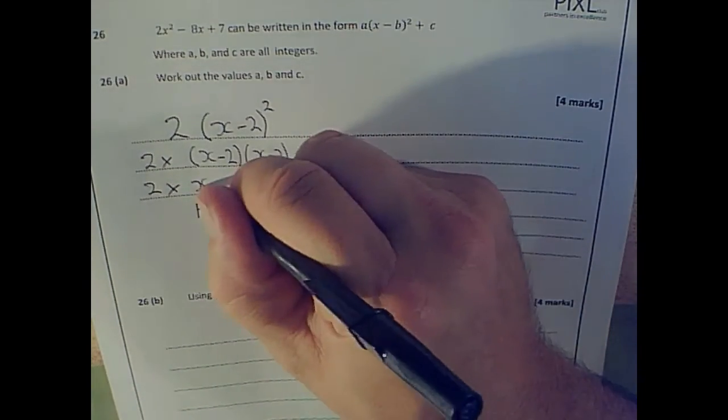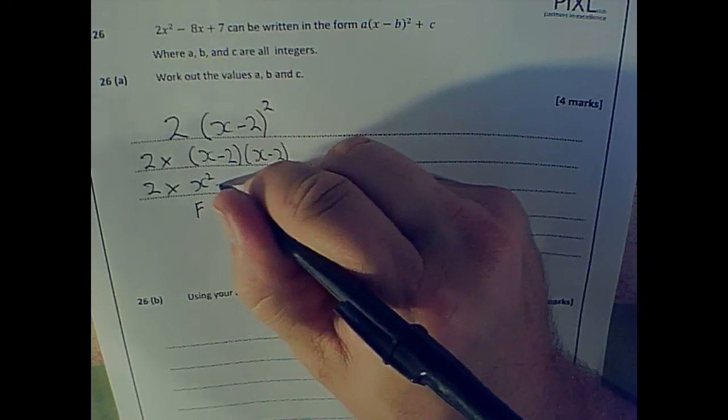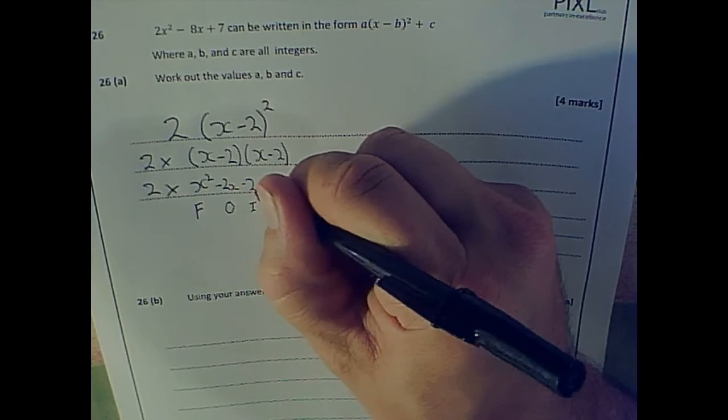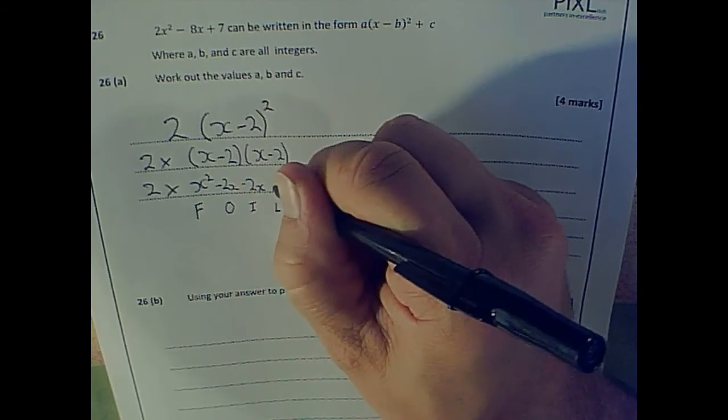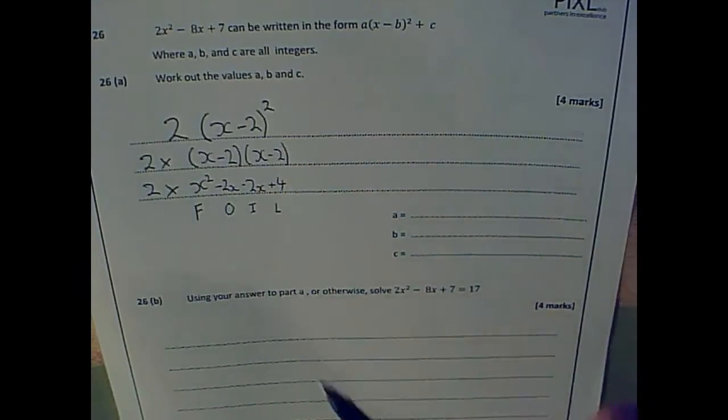So I've got x squared, outer minus 2x, inner minus 2x, last plus 4. Careful, because minus 2 times minus 2 is plus 4.